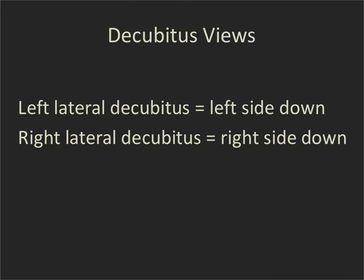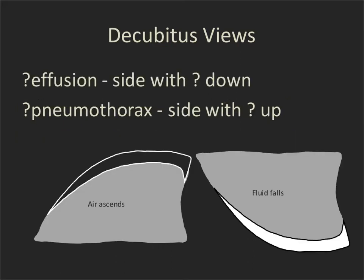Decubitus views are labeled by the downside — left lateral decubitus is left side down, right lateral decubitus is right side down. The two main uses are: to see if a patient has a mobile effusion, in which case we put the abnormal side down so the fluid falls and layers against the chest wall. For a pneumothorax, we put the abnormal side up because air ascends — we want to see the air against the chest wall, not against the mediastinum.